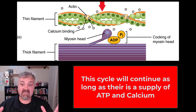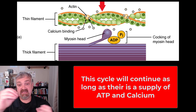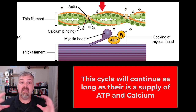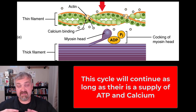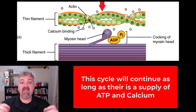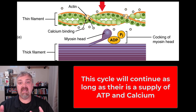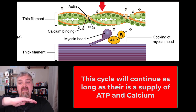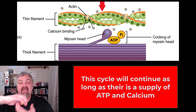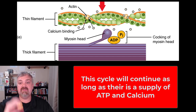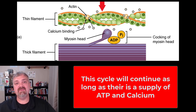For muscles to relax, ATP needs to detach actin and myosin, all the calcium is reabsorbed and gotten out of the way, and then the troponin-tropomyosin complex — the shielding proteins — gets back in the way. Myosin will try to grab onto actin, but it can't because the shielding proteins are blocking it. That's the basics of muscle contraction. I hope this helps — have a wonderful day!